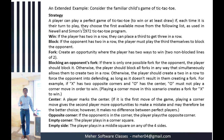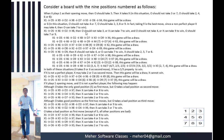In tic-tac-toe, the strategy a player can use to play a perfect game includes states like: win, block, or fork — where fork means an opportunity where the player can create two ways to win. Other strategies include blocking an opponent's fork, playing the center, opposite corner, empty corner, and empty side. These are the four-side strategies.